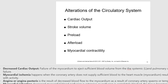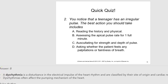Hypovolemia is a reduced circulating blood volume resulting from extracellular fluid loss, occurring in conditions such as shock, severe dehydration, or trauma. If fluid loss is significant, the body tries to adapt by increasing heart rate and constricting peripheral vessels to increase blood returned to the heart and cardiac output. A dysrhythmia is a disturbance in the electrical impulse of the heart rhythm, classified by site of origin and cardiac response. As foundation students, you should know dysrhythmias exist; you will learn more about reading rhythm strips later in the program.